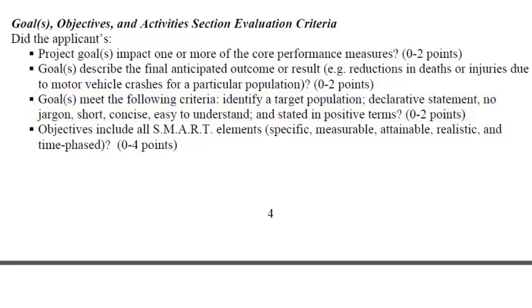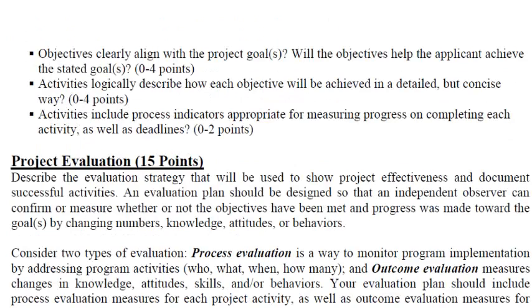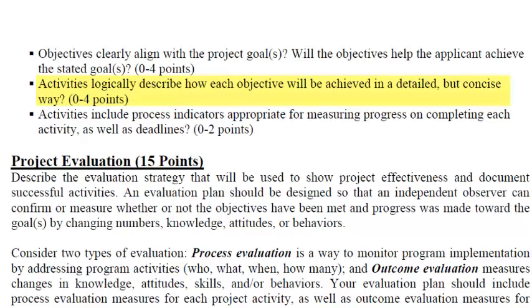Did our objectives include all SMART elements — specific, measurable, attainable, realistic, and time-based? There were a few times when we might not have had the baseline measure initially, but I think we made a case that we are going to do baseline measures, or we even know where the state was as a whole so we can compare ourselves to that. Do our objectives clearly align with the project goal? Will our objectives help us achieve the stated goal? Yes — we used the countermeasures that work to realize that we're going to target teens, law enforcement, and parents, and so our objectives are based on those three groups of people to then achieve our goal. Do our activities logically describe how each objective will be achieved in detail, but in a concise way? I think so — we might need to flesh out a few more activities to make it a little bit more descriptive, but the ones that we've mentioned so far I think are good.